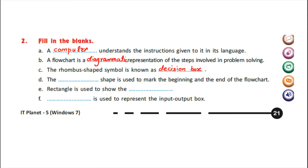D) The dash shape is used to mark the beginning and the end of the flowchart. The oval shape. So write here: oval. Your complete sentence is: the oval shape is used to mark the beginning and the end of the flowchart.